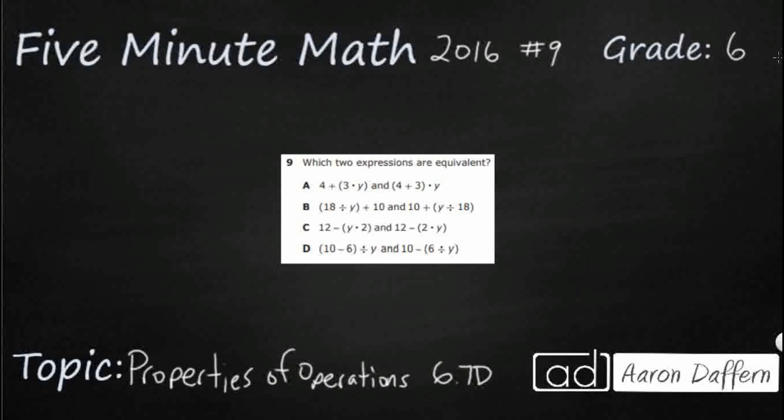There are two different properties that we are going to need to understand today. The associative property is sometimes called the grouping property. It means that you can group things differently, like all of these parentheses here, changing the grouping of what you're adding first or multiplying first, and the answer will still stay the same.